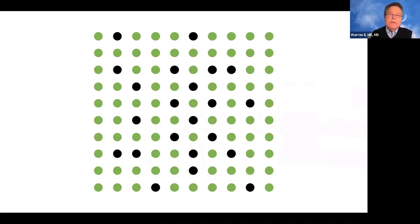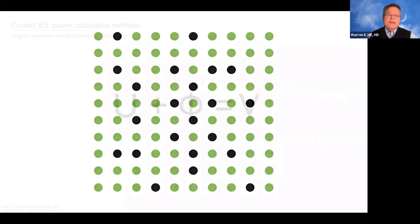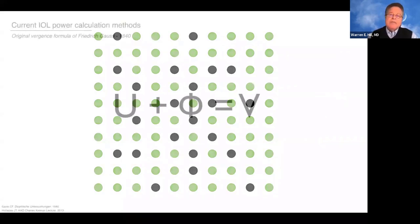If we drill down further in the Haigis formula optimization database, really less than 1% of surgeons are at 92% for the plus-or-minus half-diopter accuracy. About 6% of surgeons in that database are at 84%. And as mentioned, the vast majority are at about 78%. Graphically, a 78% accuracy looks like this, and if we're implanting the Restore, Symfony, or toric IOLs, I think we need to do a little bit better — I think we'd all be in agreement on that.